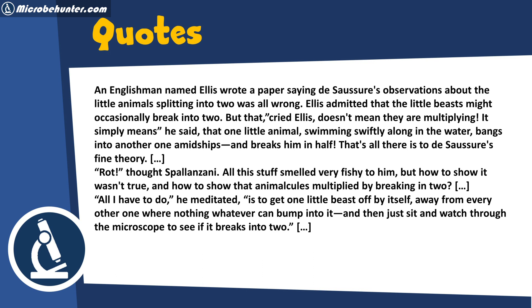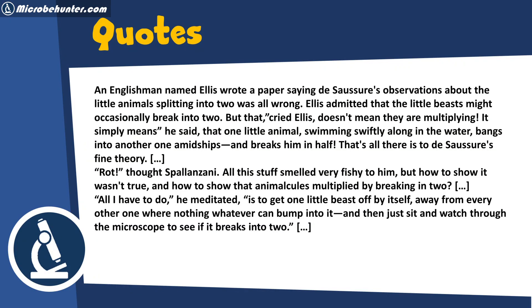An Englishman named Ellis wrote a paper saying Sauser's observations about the little animals splitting into two was all wrong. Ellis admitted that the little beasts might occasionally break into two but that, cried Ellis, doesn't mean that they're multiplying. It simply means he said that one little animal swimming swiftly along in the water bangs into another one amidships, crashes into another one and breaks in half. So in other words he said they're splitting but not because they're multiplying, they're breaking in half because they bump against each other. That's what I'm saying, they don't divide and multiply and reproduce this way, they just bump against each other. And then you have to come up with an experiment to debunk that.